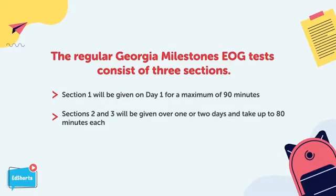The regular Georgia Milestones EOG tests consist of three sections. Section 1 will be given on day 1 for a maximum of 90 minutes. Sections 2 and 3 will be given over one or two days and take up to 80 minutes each. Both math and English language arts assessments had many tech-enhanced items including MCQs, drag and drop, EBSRs, multi-part questions, and more.